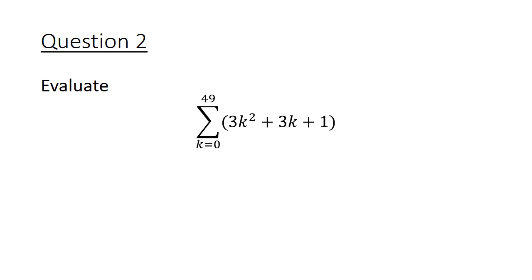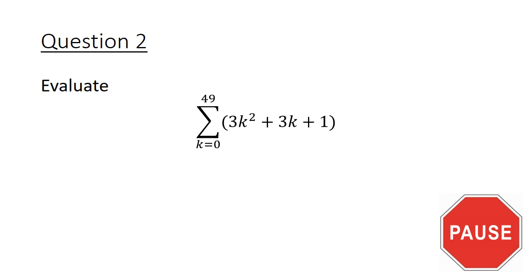Moving on to question 2: evaluate the sum of 3k squared plus 3k plus 1 from k equals 0 to k equals 49. Pause the video here and give this question a good try.